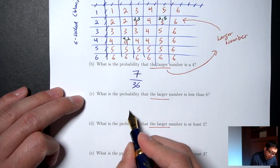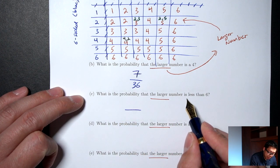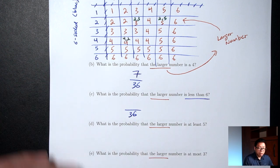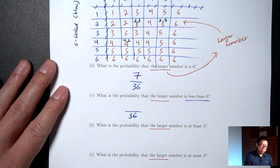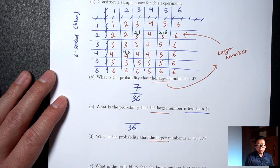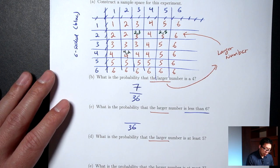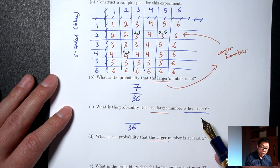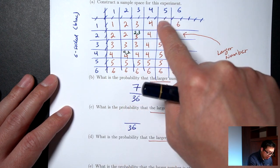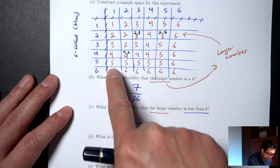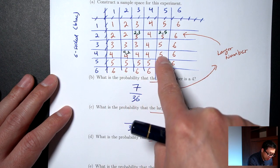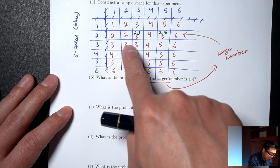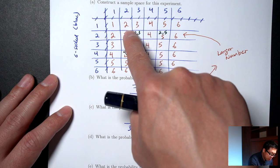Part C: what's the probability that the larger number is less than 6? Bottom is 36. Less than 6 would be all the 5s, 4s, 3s, 2s, and 1s. That's a lot — counting gives 25 outcomes. Probability is 25/36.